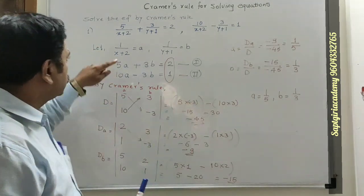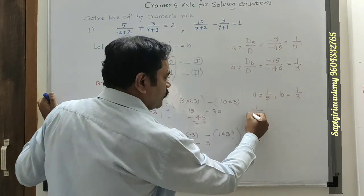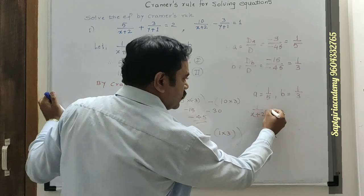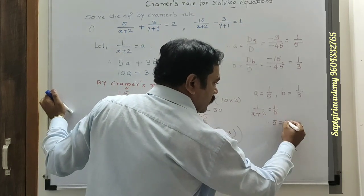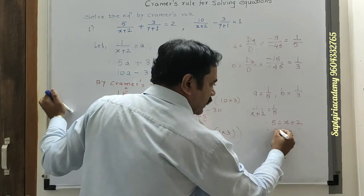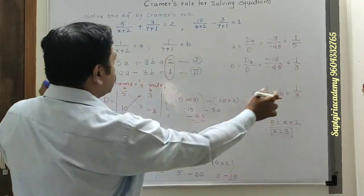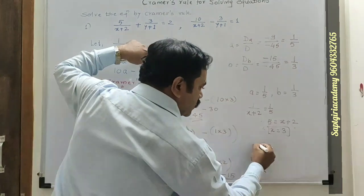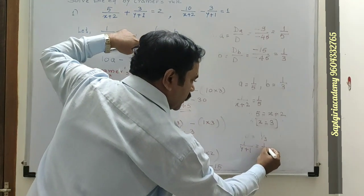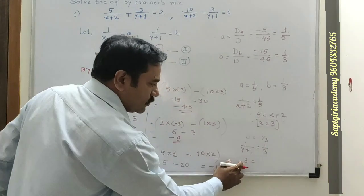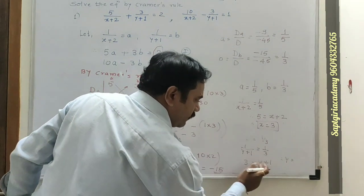We assumed a equal to 1 upon (x+2). Putting a equal to 1 upon 5, we get 1 upon (x+2) equal to 1 upon 5. By cross-multiplying, we get x plus 2 equal to 5, therefore x is equal to 3. Similarly, b is equal to 1 upon (y+1) equal to 1 upon 3. By cross-multiplying, we get y plus 1 equal to 3, therefore y is equal to 3 minus 1, that is 2.